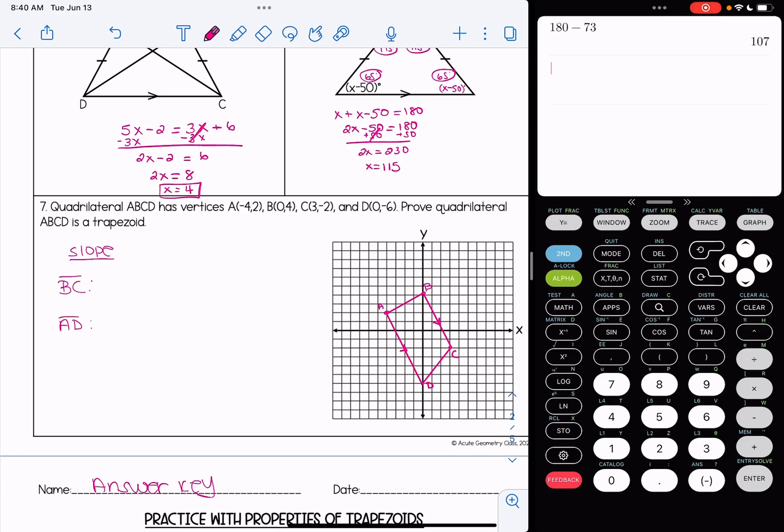So we have to show these sides are parallel in order for this to be a trapezoid. So I'm going to do y2 minus y1 over x2 minus x1 to find my slope. You could also do rise over run on your graph. That would be fine.